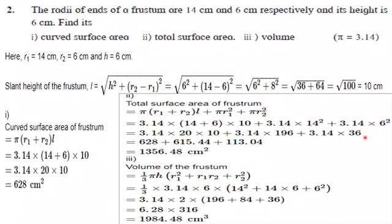Substitute these values, find out square terms, add it properly, multiply it properly. And then you have total surface area of frustum as 1356.48 cm square.